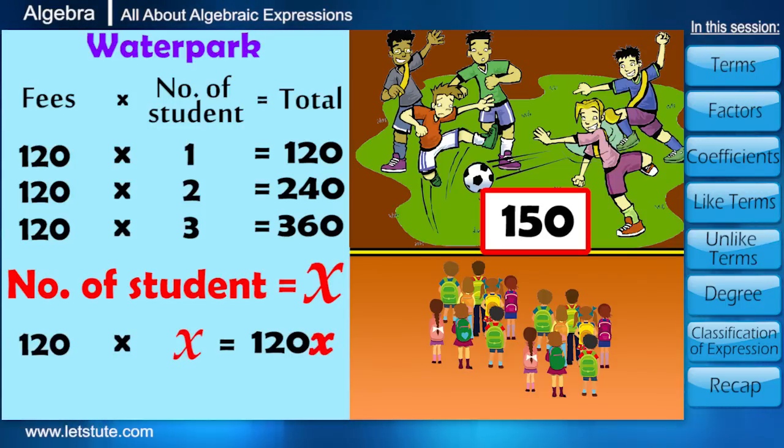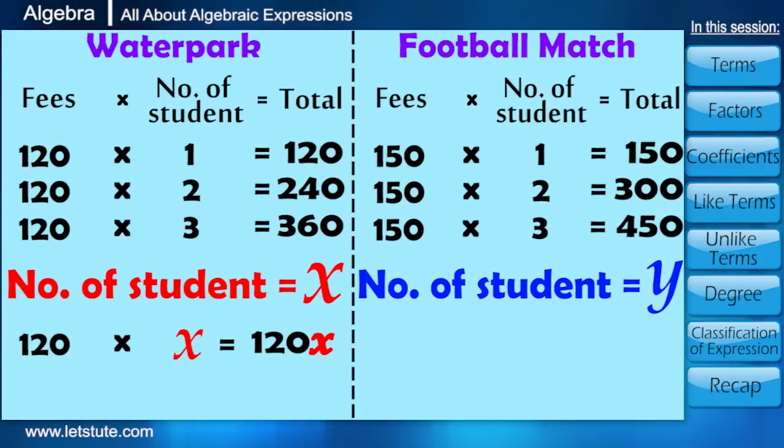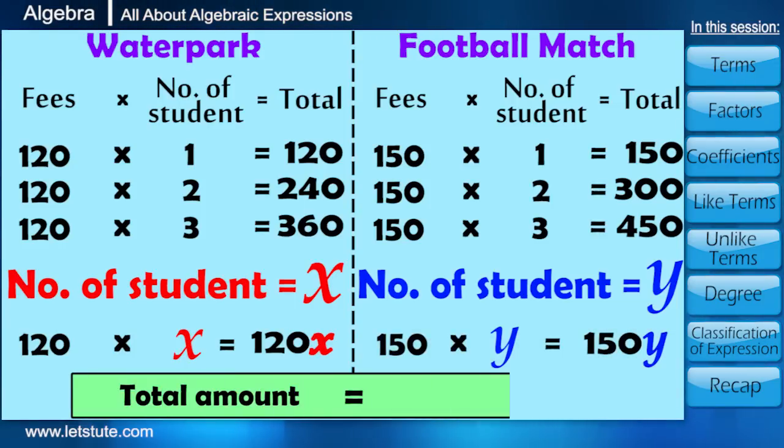Similarly, if Y numbers of students are going for football match, then the total fees for it will be 150 into Y. Therefore, the total amount for both the places can be calculated as 120 into X plus 150 into Y.